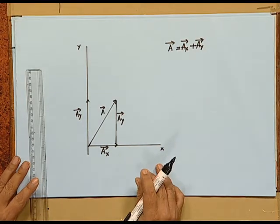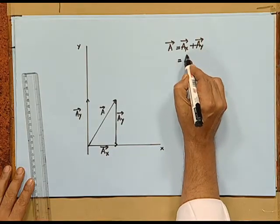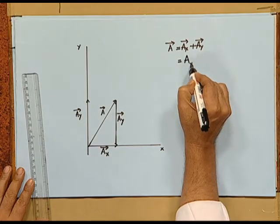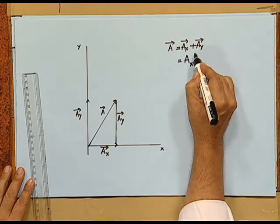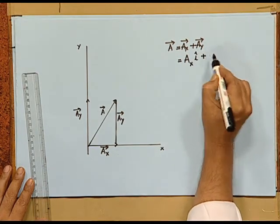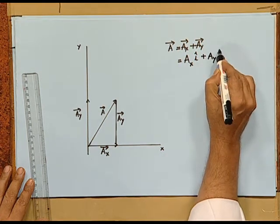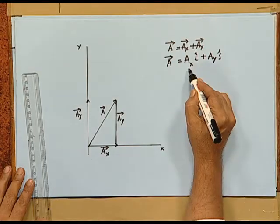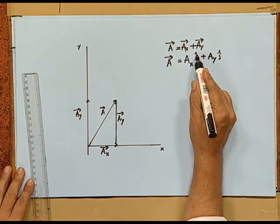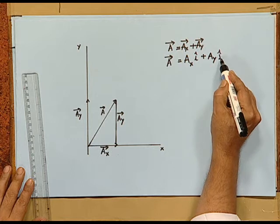Now Ax vector and Ay vector are called the vector components along the x and y direction. These vectors are also written in the form Ax i-cap plus Ay j-cap. Vector A is equal to Ax i-cap plus Ay j-cap.